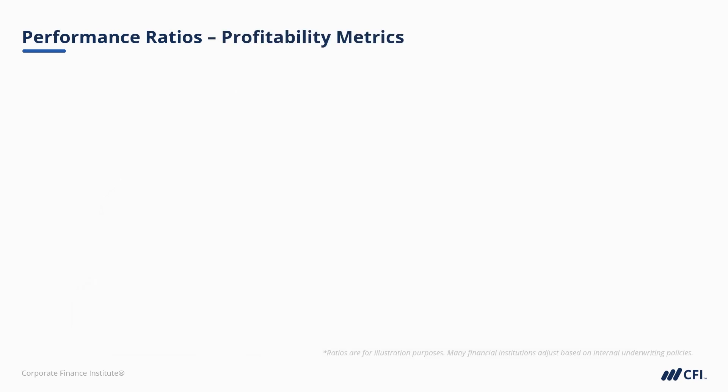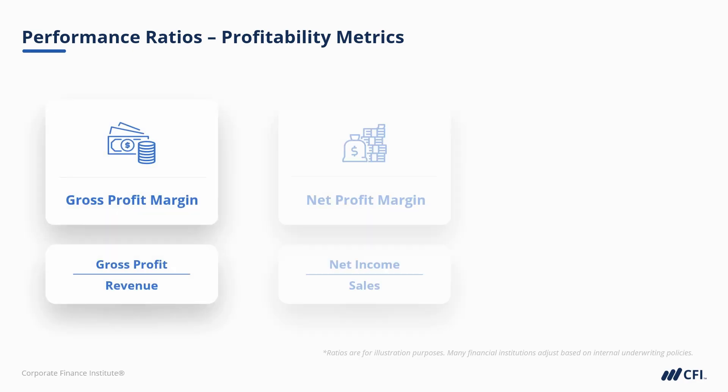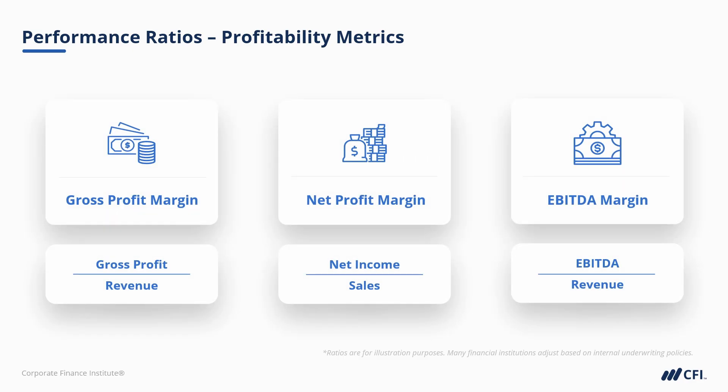Profitability metrics relate to a firm's margin profile. Usually we consider gross margin, net margin, and some type of cash flow margin, often expressed using EBIT or EBITDA, which stands for Earnings Before Interest, Taxes, Depreciation, and Amortization. All other things being equal, higher profitability ratios are better.